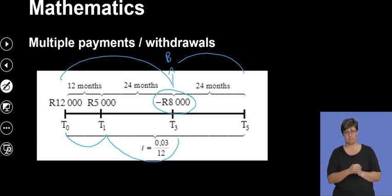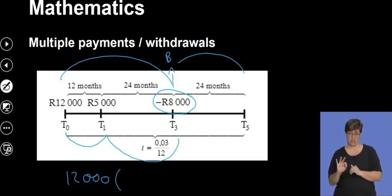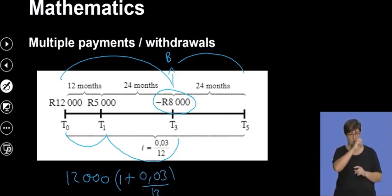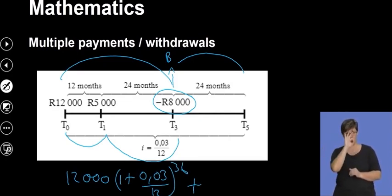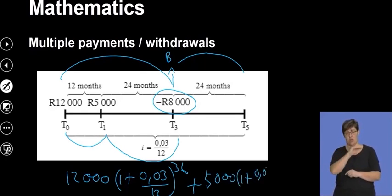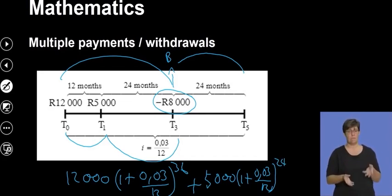For the calculation: the R12 000 gains interest for the full three years up to t3, so that is 12 000 × (1 + 0.03/12)^36. Then we add the R5 000 which gained interest for two years before the withdrawal: 5 000 × (1 + 0.03/12)^24. From whatever we get, we then subtract the R8 000 withdrawal.